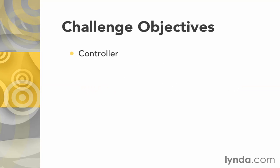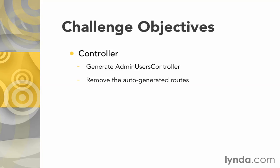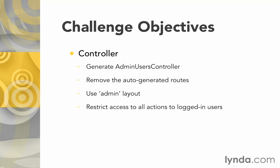Then we'll focus on the controller. We're going to need to generate a new admin users controller. Once you do that, you'll want to remove the auto-generated routes that Rails will create for you, because we're using the default route. Then you'll want to use the admin layout for your controller — we created that layout previously. You'll restrict access to all the actions in this controller to only be accessible by logged-in users.